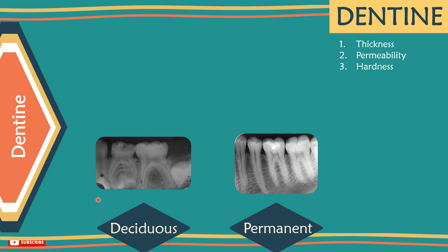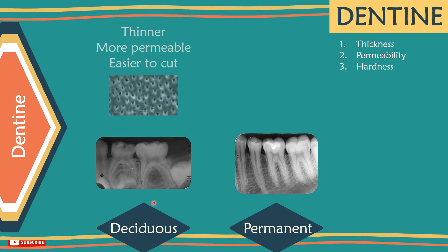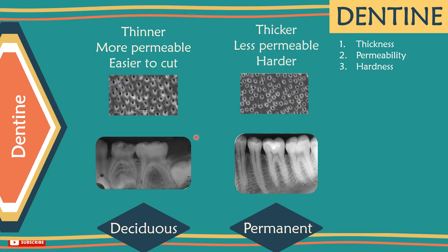In primary teeth, dentine is half the thickness of that in permanent teeth. It is also more permeable and easier to cut through, unlike that of permanent teeth, in which dentine is thicker, less permeable and harder in consistency.